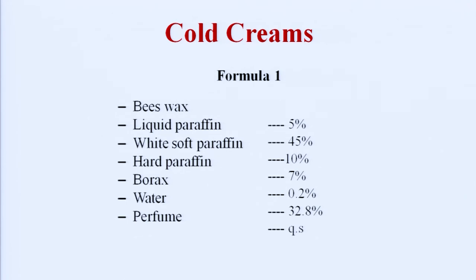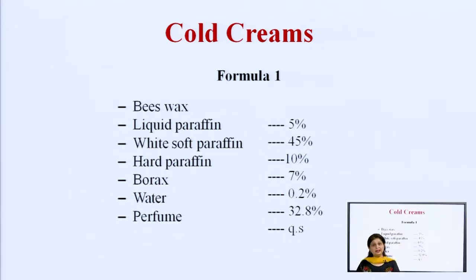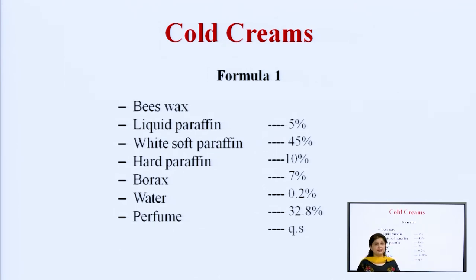How can we prepare cold creams in the lab? First we identify which ingredients are water-soluble and which are oil-soluble. We dissolve oil-soluble ingredients into the oil part and water-soluble ingredients into the water part. For solubilization we use temperature; the generally recommended temperature is 70 to 75 degrees centigrade. We keep both the oil part and water part at 75 degrees centigrade, then gradually add the water part into the oil phase with trituration to generate the cold cream.